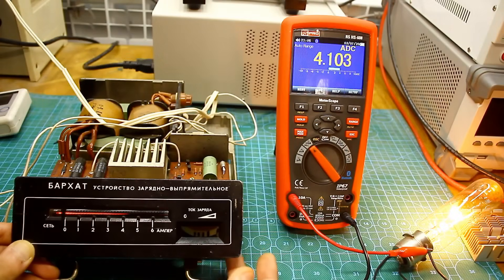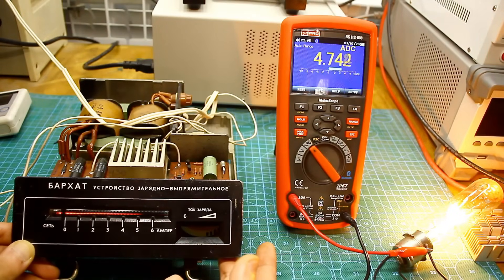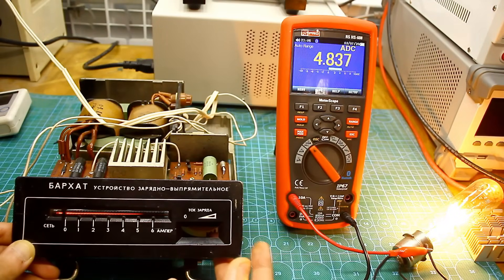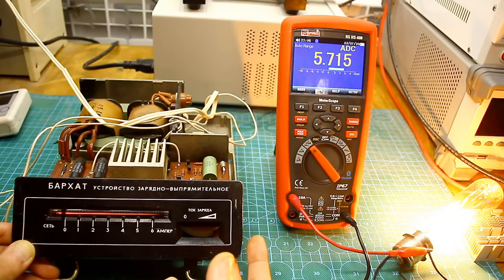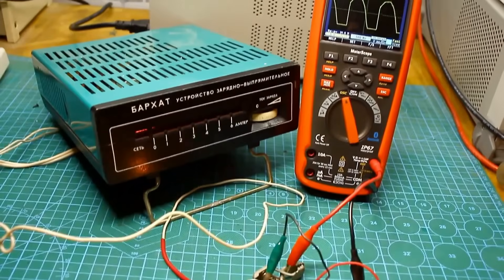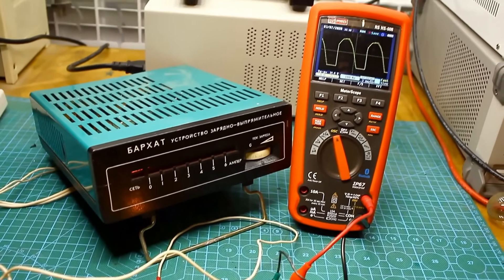Unfortunately, such indicators are not entirely linear, and there will be some variation at different current values. But our indicator can show the approximate charging current. We assemble everything as it was, and with that, the repair is complete.